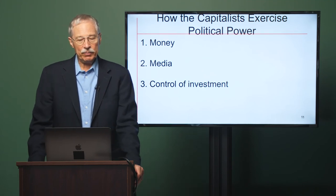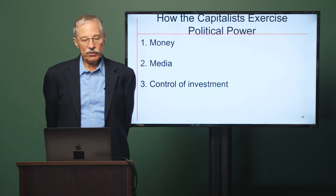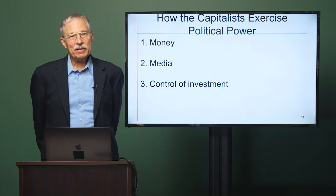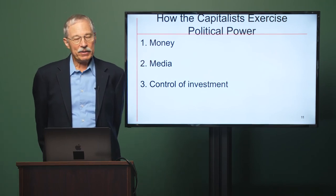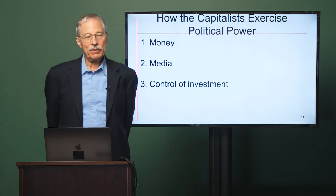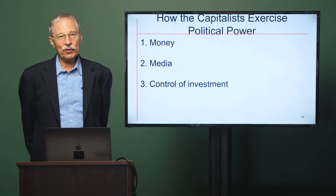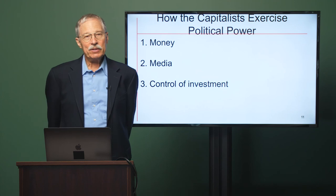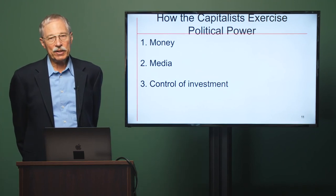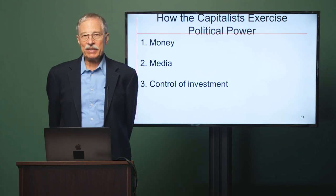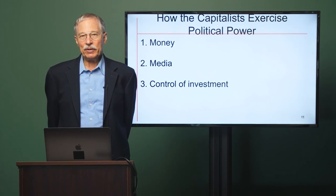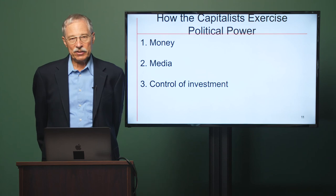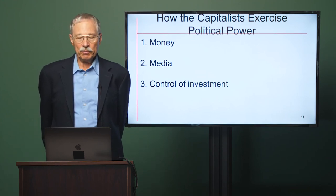According to the political economy analysis, there are three main mechanisms through which capitalists exercise political power: money, media, and control of investment. Capitalists have a lot more money than anyone else, and money tends to translate into political power. The mass media are capitalist institutions that depend on capitalist institutions for advertising revenue, and they tend to promote the interests of capitalists. Capitalists also control investment — if the government doesn't do things they favor, capitalists might invest less, causing problems that could lead to elected officials losing elections. In other resources and in discussions in this class, these matters will be looked into more deeply.